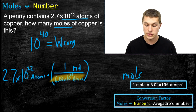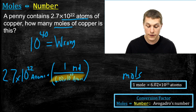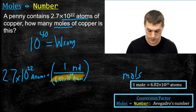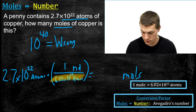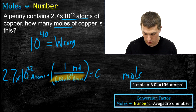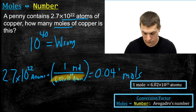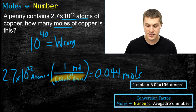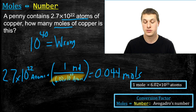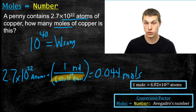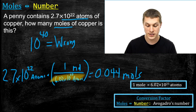Go ahead and grab your calculator and do this problem. If you put that number in parentheses and solve, you get 0.044 moles. That makes sense — we get less than one mole. Since I started with 10 to the 22nd atoms, which is less than 10 to the 23rd atoms, it makes sense that I have less than one mole as my answer.